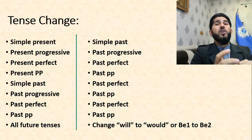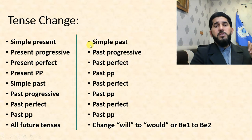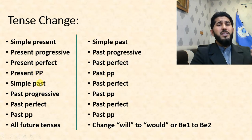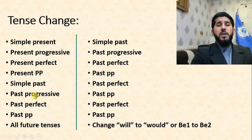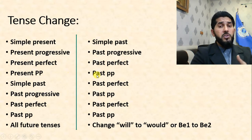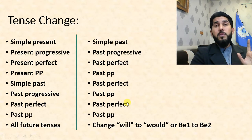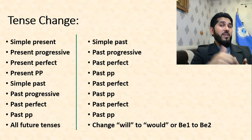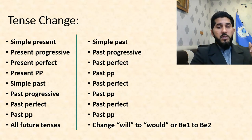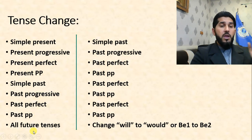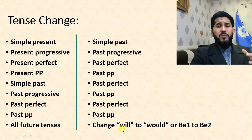Regarding tense changes: when we change direct speech into indirect speech, we go one tense back. Simple present becomes simple past; present progressive becomes past progressive; present perfect becomes past perfect; present perfect progressive becomes past perfect progressive. Simple past also changes to past perfect — so two tenses change to past perfect. Past progressive also changes to past perfect progressive. Past perfect and past perfect progressive remain unchanged, as there is no tense further back. Future auxiliary 'will' changes to 'would,' and 'be going to' changes to 'was/were going to.'